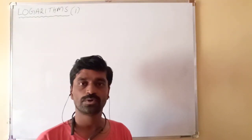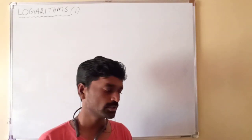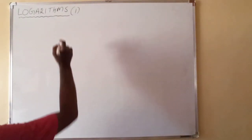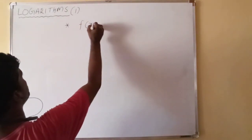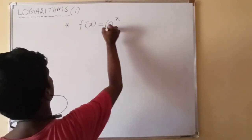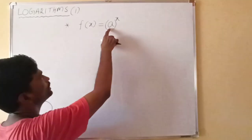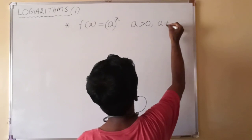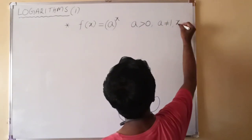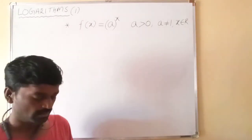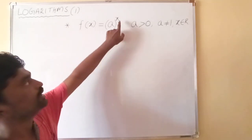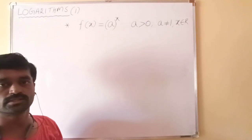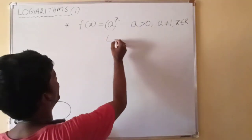Good morning, dear students. Today I'm going to start logarithms. First, we have one important definition called exponential function. The definition for exponential function is: a function f of x is equal to a power x, where the base a must be a positive constant other than one, and the exponent x is any real number. The base a is a constant, x is a variable, and such a function a power x is called an exponential function.